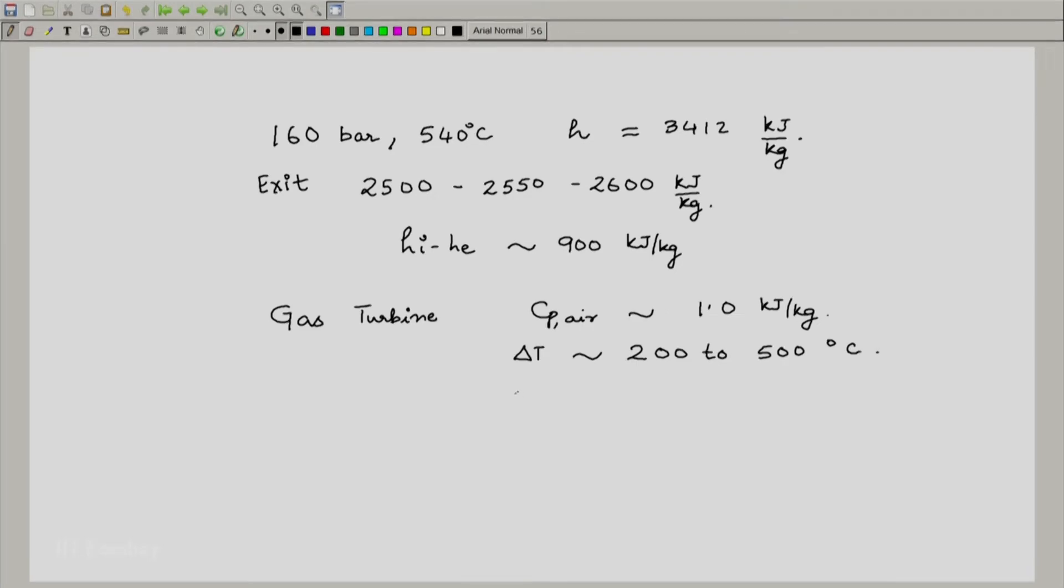You see that even here the delta H, which would be just C_p times delta T, would be between 200 to 500 kilojoule per kg.